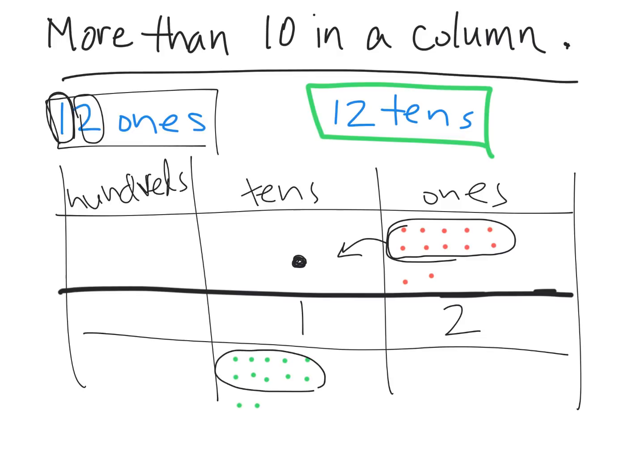We know that whenever you have ten, you can bundle them together and put that bundle in the next column over. So we end up getting one hundred and two tens. I want you to notice we have a 12 here—one and two—and we have a 12 here—a one and a two. In both cases, we had 12 ones and 12 tens. But this time, we have this one because it's in the hundreds column, means we have one hundred, two tens, and no ones left over.